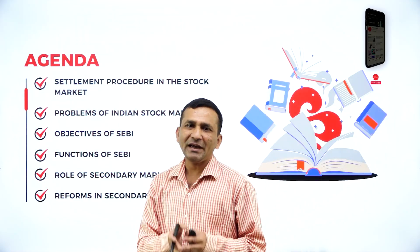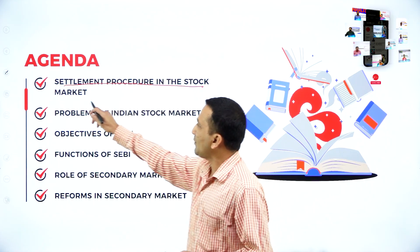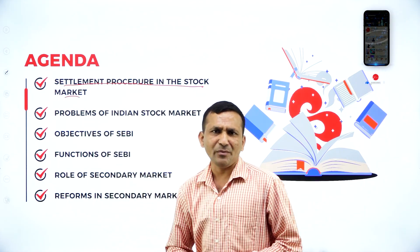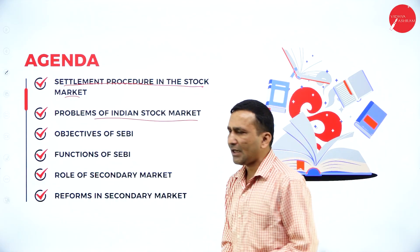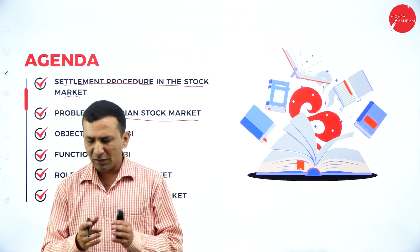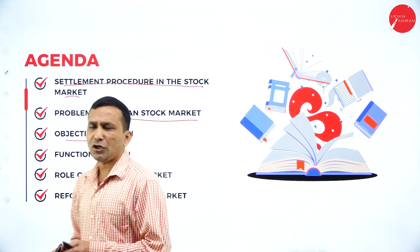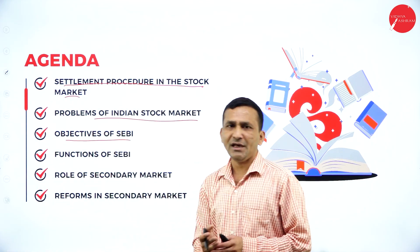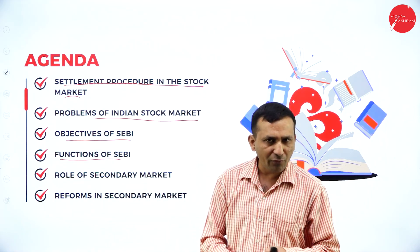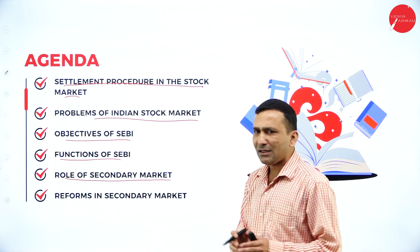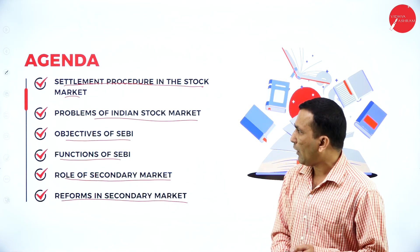Today's agenda: you are getting more clarity from the last session on the procedure of Secondary Stock Exchange. Now, which is the settlement procedure in the stock market — what exactly the settlement is going on between the investors as well as company. And the problem of Indian stock market — what major problems are faced by the Indian secondary market. And what are the objectives of SEBI? Each and every regulatory authority has an objective, and SEBI also has an important objective. You are getting more clarity about the functions of SEBI — Security Exchange Board of India — and the role and reforms of the secondary market.